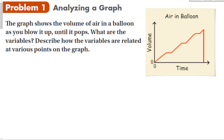Looking at this first problem, the graph shows the volume of air in a balloon as you blow it up until it pops. What are the variables? The variables are usually what's on the axes. We have time as the input, the x-axis — the independent variable. If I tell you a specific time, you can tell me the volume. The volume depends on time, and that's my y-axis, my output of this particular function. So my variables are time and volume.